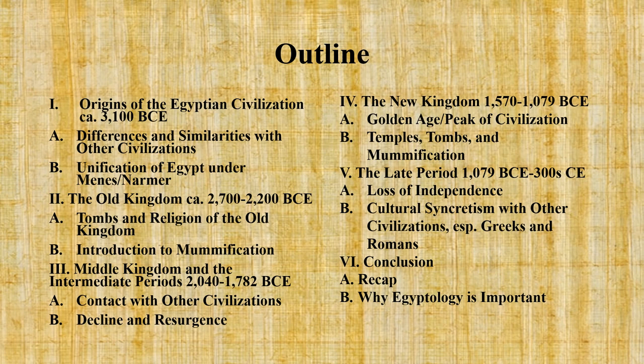After that, we'll cover the New Kingdom from about 1570 to 1079 BCE. The New Kingdom is often thought of as being the Golden Age of the Egyptian civilization, as they reached the peak of their monumental architecture in terms of their temples and tombs, as well as the sophistication of their mummification techniques. Some of the most famous Egyptian rulers came from the New Kingdom.